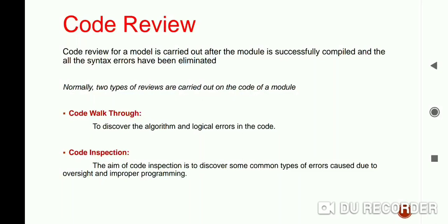In short, code review makes sure that the coding standards are followed and helps to detect as many errors as possible before testing. These reviews are passed on from a group of engineers after coding any module, and code review is performed in two types: the first is code walkthrough and the second is code inspection.